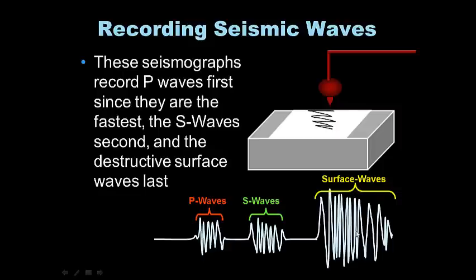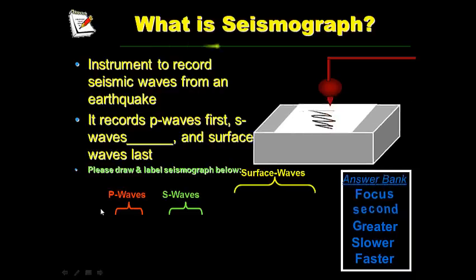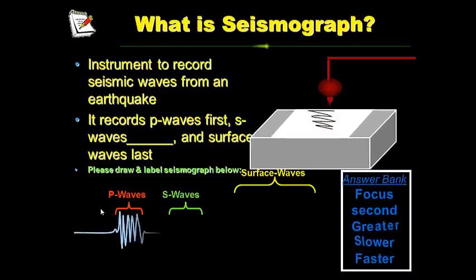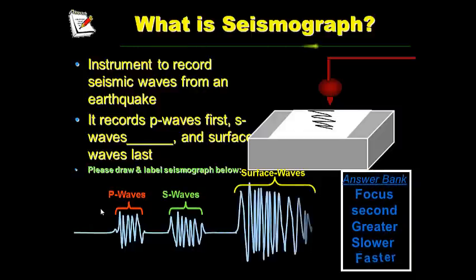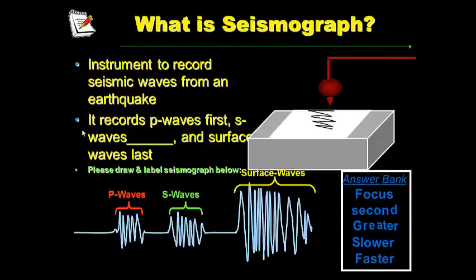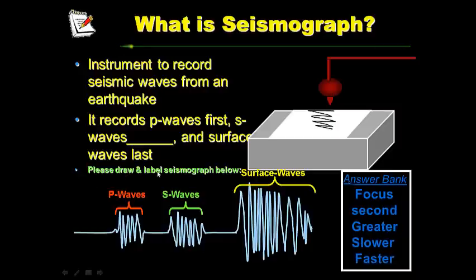These surface waves have the highest amplitude. A seismograph is an instrument used to record seismic waves from an earthquake. Use the answer bank to determine which word best completes the sentence. Go ahead and pause this, and draw and label the seismograph down below.